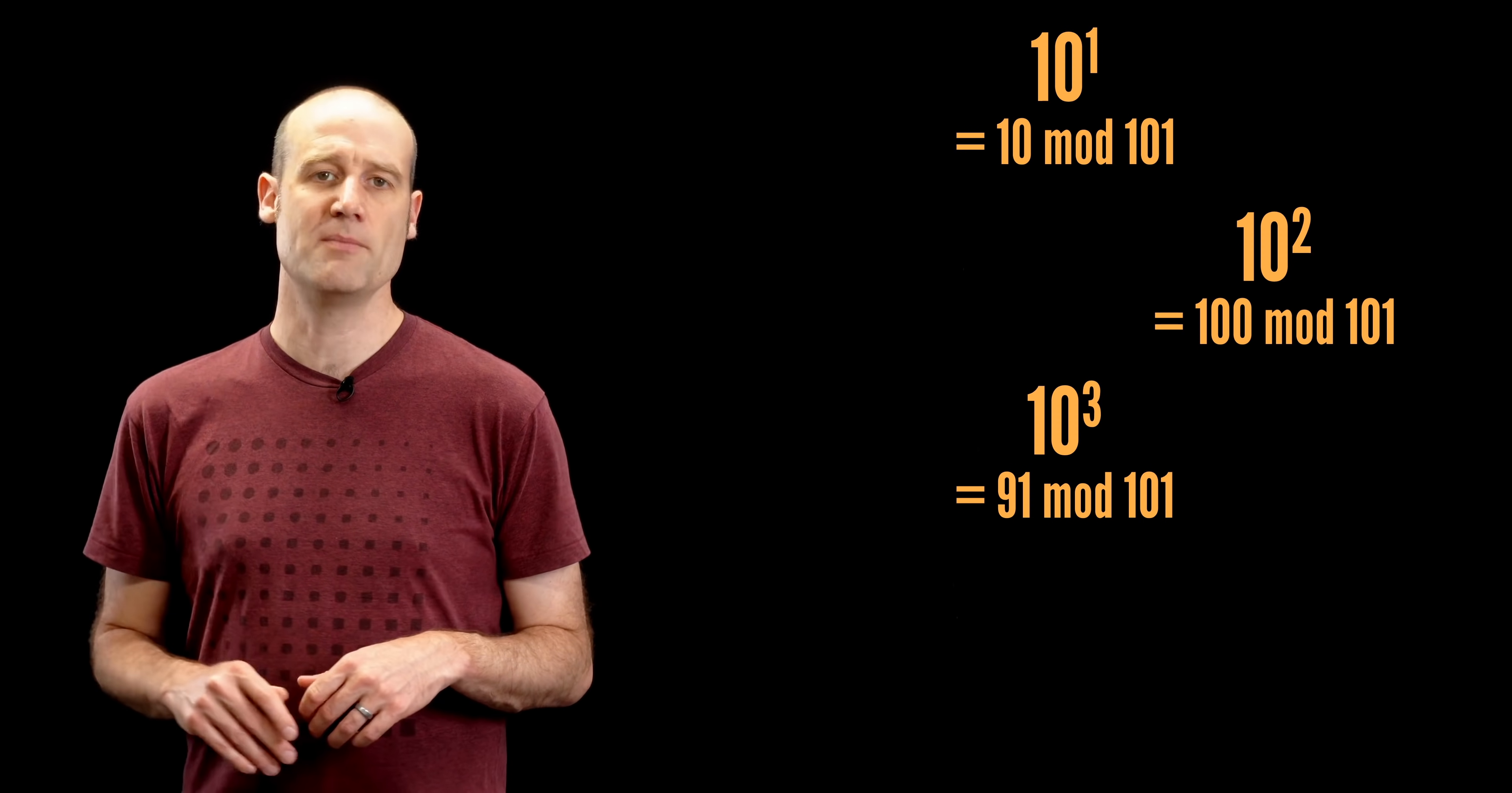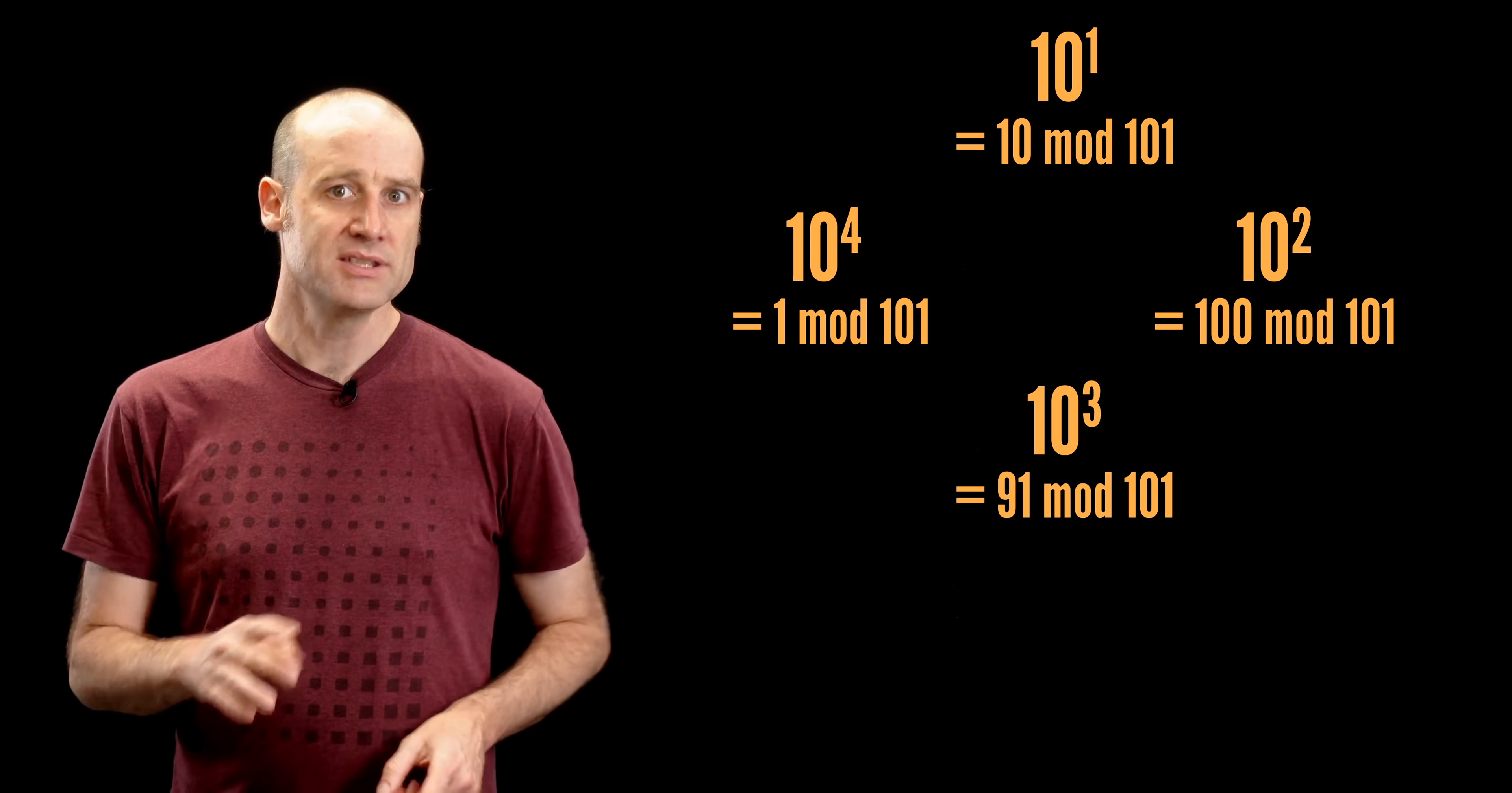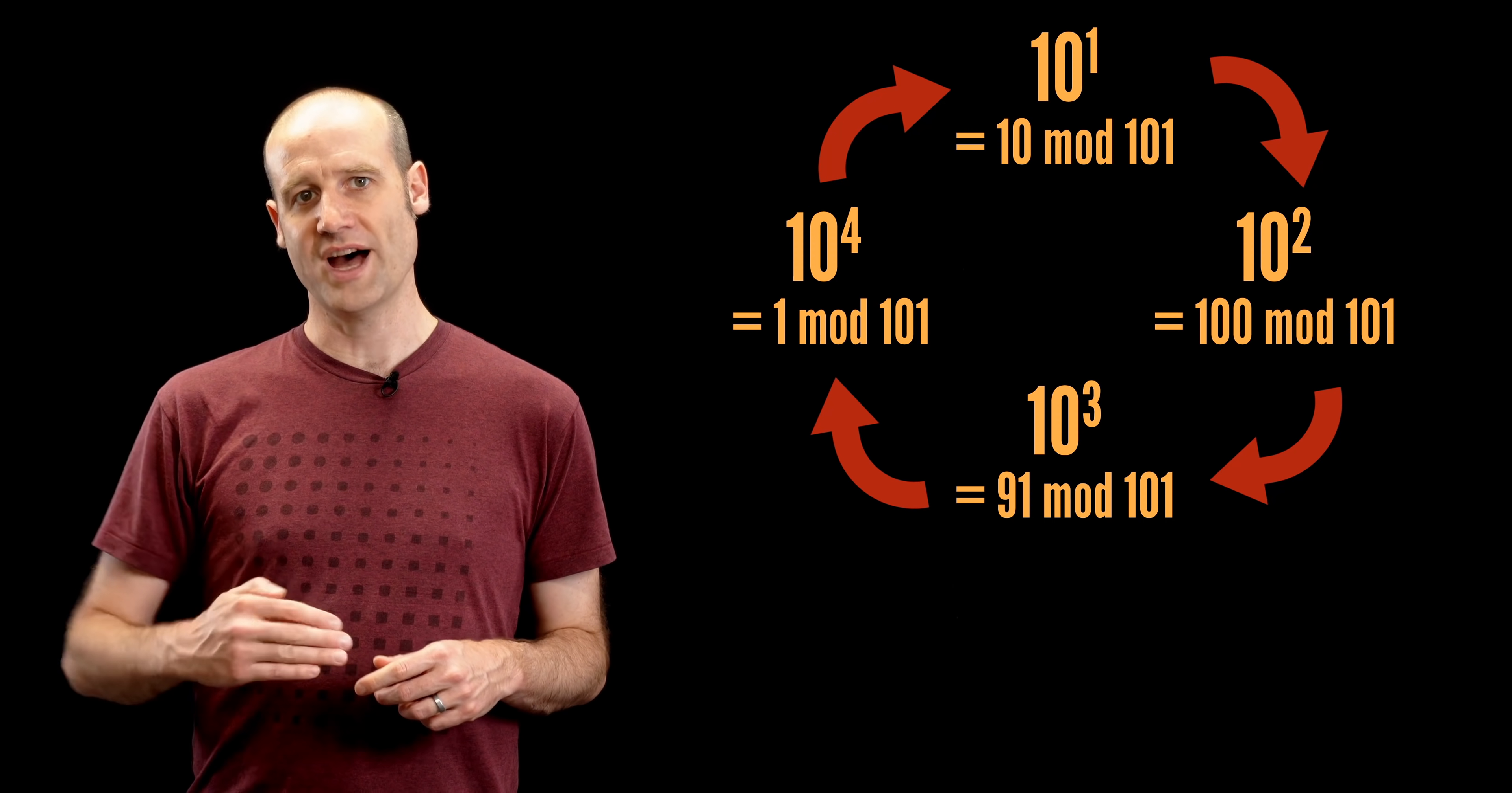10 to the power of 4 is remainder 1. Ah, there it is. We've got it. But then if you keep going, 10 to the 5 is back to 10 again. And you just go around in this cycle. It's a cycle of order 4.